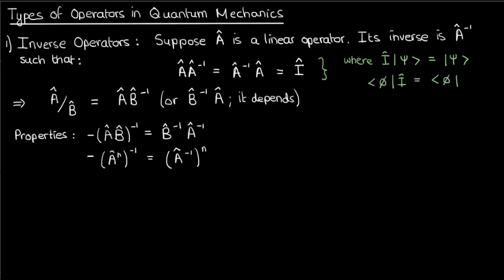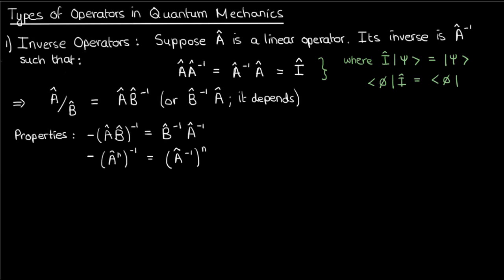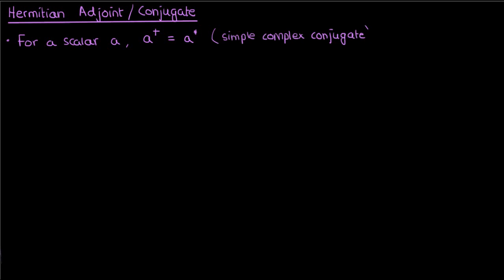The next and probably the most important operator is the Hermitian operator. But before I talk about the Hermitian operator, let me briefly describe the Hermitian adjoint or the Hermitian conjugate. For a complex number or scalar a, the Hermitian conjugate, denoted by this a cross, is just the complex conjugate of that number.